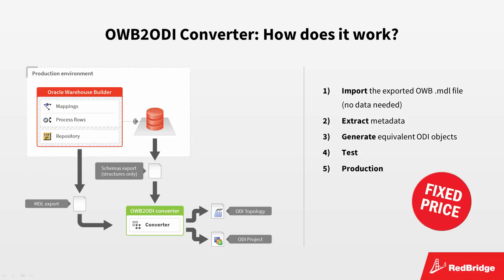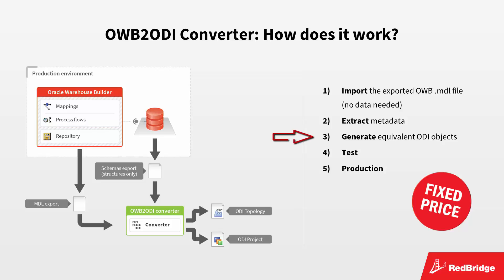How does the conversion work? First of all, you need to provide us with an exported OWB MDL file — we only need the file, not the data. Our converter will extract the metadata from the MDL file and we use the ODI API to generate the equivalent ODI objects. For example, OWB locations will become ODI topology logical schemas, OWB modules will become ODI folders, and OWB mappings will be converted into ODI packages, interfaces or mappings.